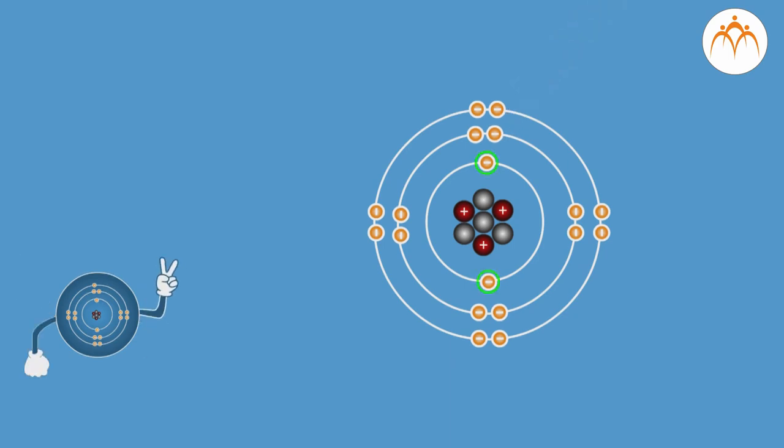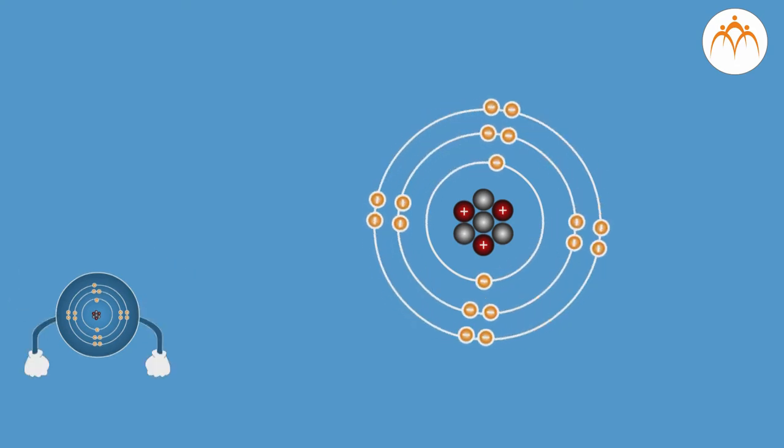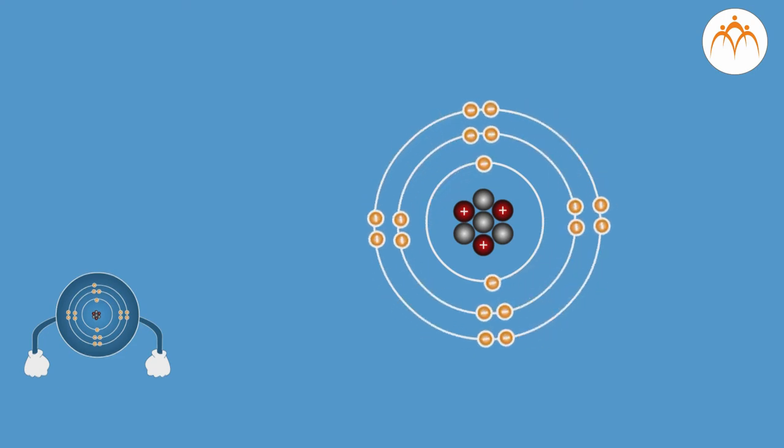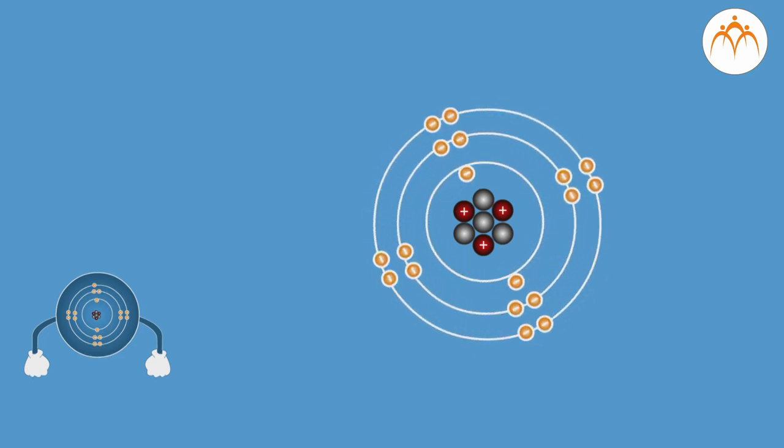Negatively charged electrons are revolving around the nucleus in shells. The energy of electrons remains constant while in a particular orbit. When an electron jumps from an inner orbit to an outer orbit, it absorbs energy. When an electron jumps from an outer orbit to an inner orbit, it emits energy. This energy equals the difference in energy levels of the two shells.